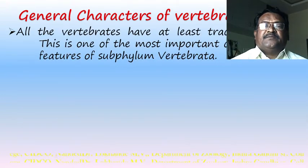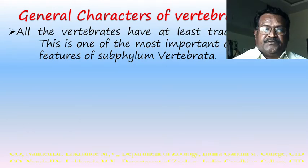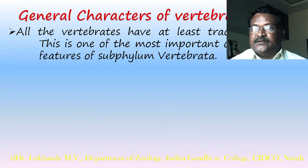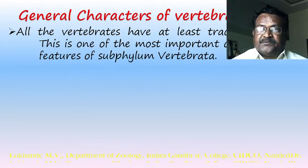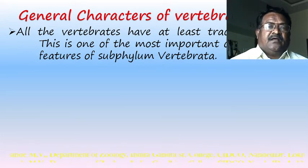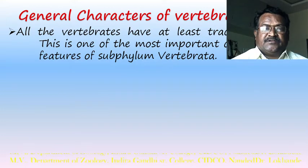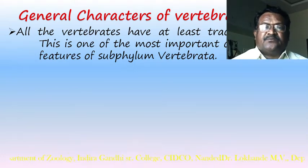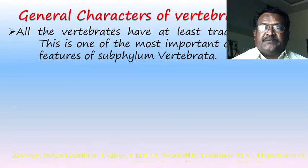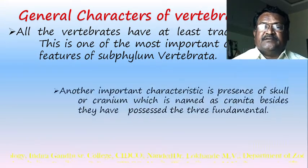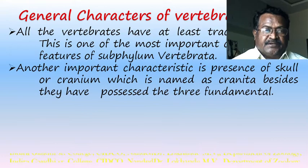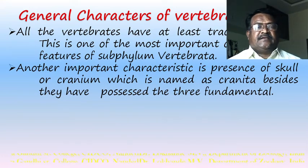All vertebrates have at least traces of a notochord — this is one of the most important characteristics of phylum Chordata. Chordates are classified into two groups: protochordates and vertebrates. In protochordates the notochord is retained, while in vertebrates the notochord is replaced by the vertebral column.